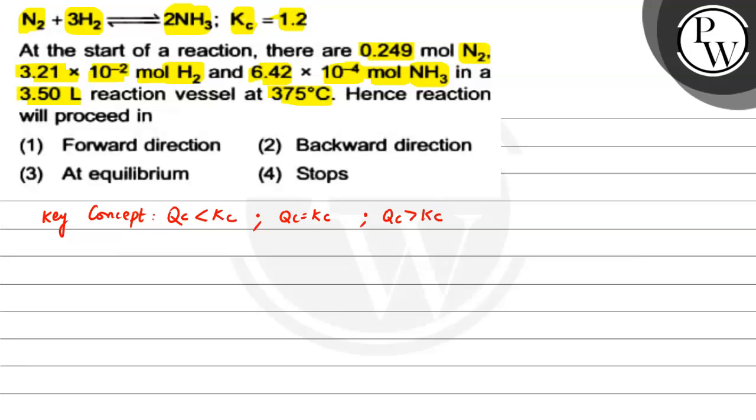So first we will take the concentration of N2. N2 is 0.249 moles divided by 3.5 liters, which equals 0.0711 molar. Next is H2. H2 is 3.21 × 10^-2 moles divided by 3.5 liters, which is equal to...